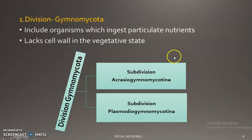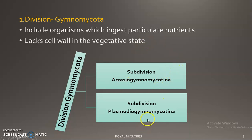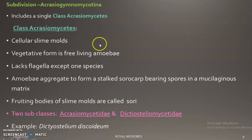Division Gymnomycota includes mainly organisms ingesting particulate nutrients; they lack a cell wall in the vegetative state. This division is divided into two subdivisions: Acrasiogymno mycotina and Plasmodiogymno mycotina. The first subdivision, Acrasiogymno mycotina, includes a single class — Class Acrasiomycetes.